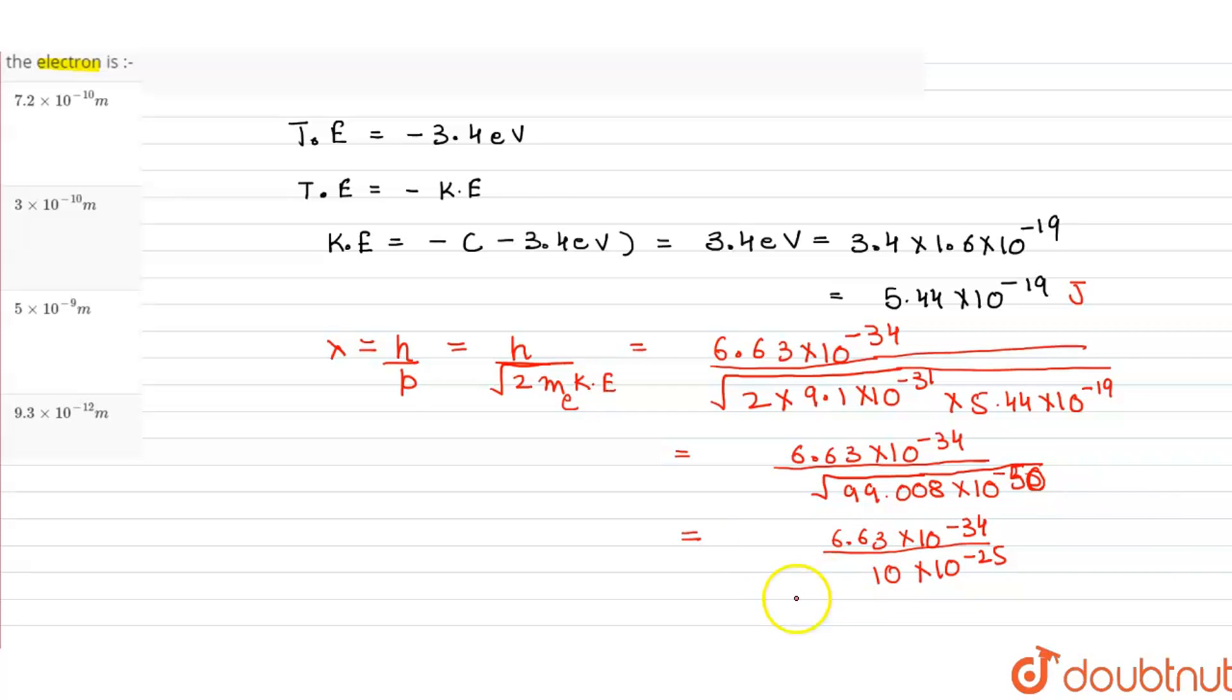Now, 6.63 divided by 10 - how much will it be? 0.663. And when it goes to the numerator, it will be minus 9. If we shift this decimal point, it will be 6.63. So this is our correct answer.